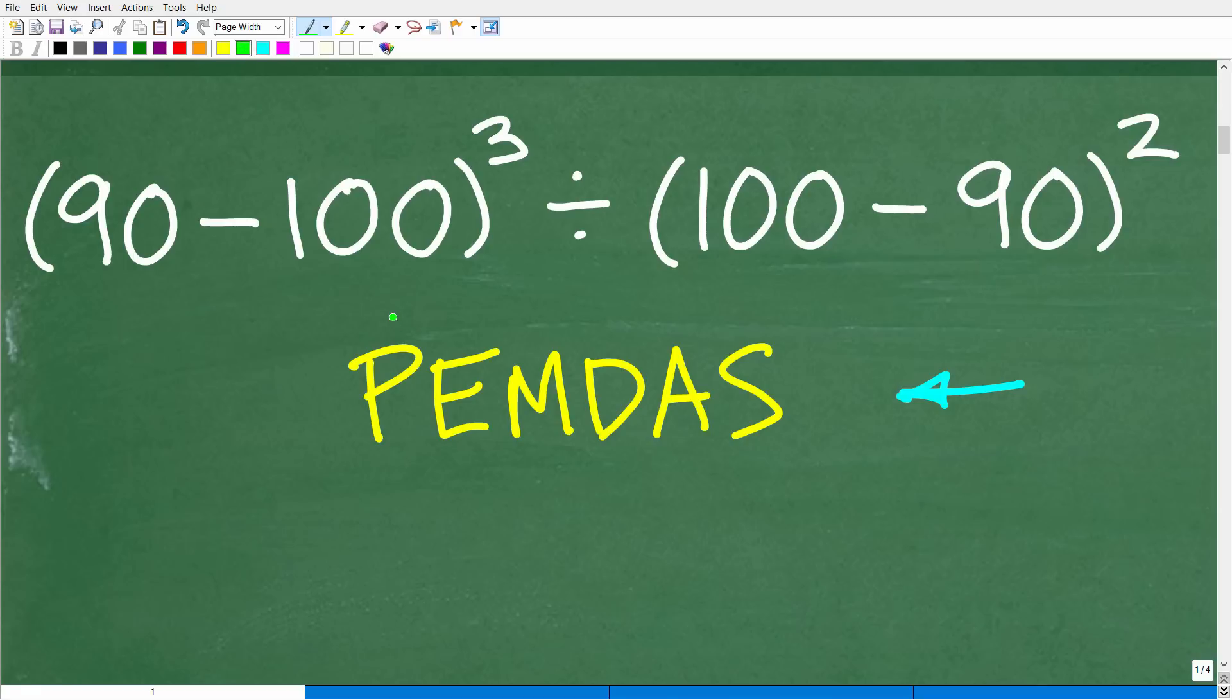Okay, so let's go ahead and get into it right now. So what does it stand for? Well, it's a checklist that goes from left to right. So P stands for parentheses. So if we see parentheses, which, of course, we have some in our problem, this is where we need to start.